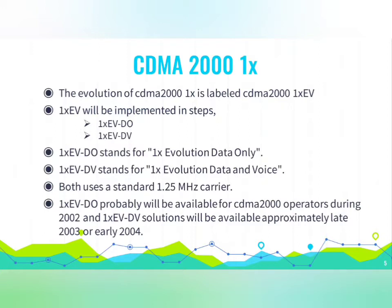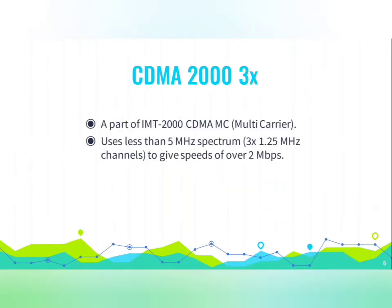1X EVDO was expected to be available for CDMA 2000 operators during 2002, and 1X EVDV solutions approximately in late 2003 or early 2004. CDMA 2000 3X is part of multi-carrier technology; it uses less than 5 megahertz spectrum to give speeds of over 2 Mbps.